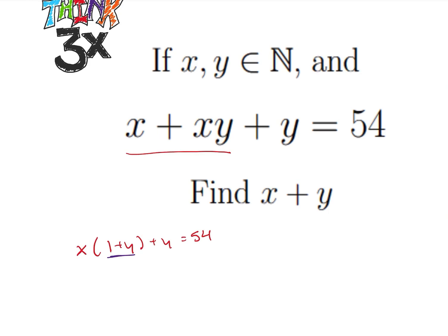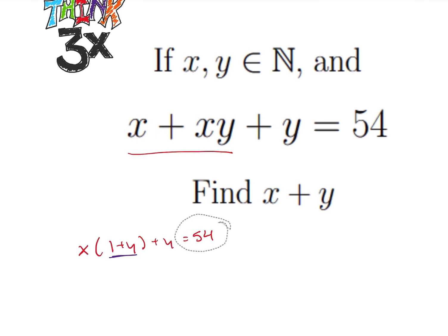So I'm going to go ahead and pull this over a little bit, and I'm going to add 1 to both sides. So I'm going to take this, add 1, and I'm going to add 1. And what that's going to do is now I have x times 1 plus y plus 1 times 1 plus y is equal to 55.